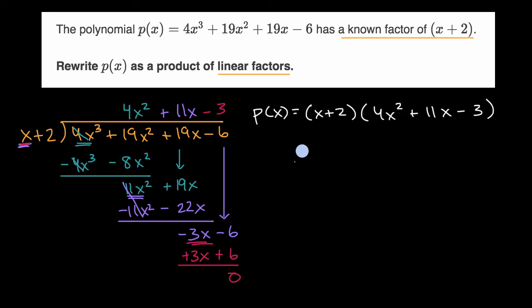Now we're not done yet because we haven't expressed it as a product of linear factors. This one over here is linear, but 4x² + 11x - 3, that's still quadratic. So we have to factor that further.